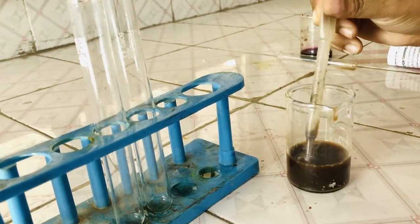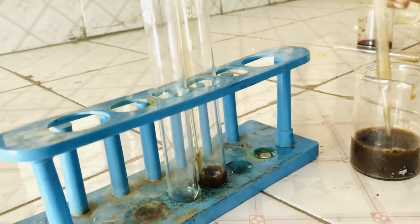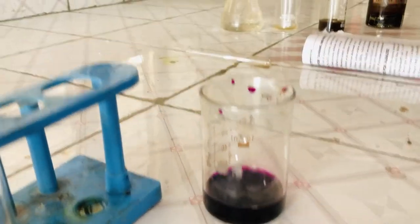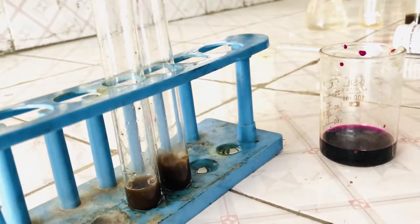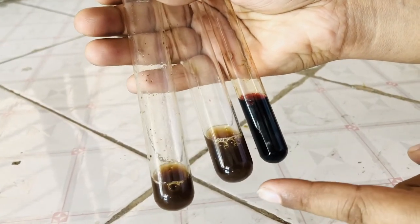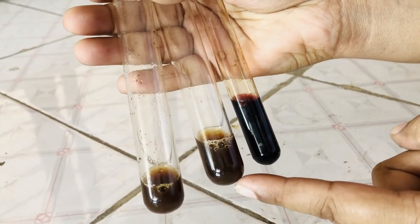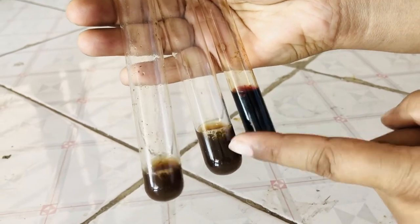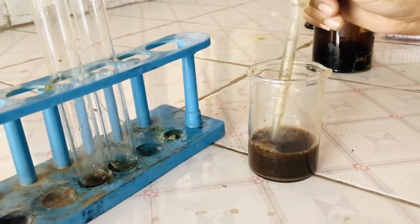Now again we will prepare the test and standard solution of the amla. Now we will add KMnO4 to the test solution. This is the standard solution. Test solution in which we have added KMnO4 and this is the standard KMnO4 solution. You can see the decolorization of KMnO4 solution has taken place in the test solution. This confirms the KMnO4 test for tannins.